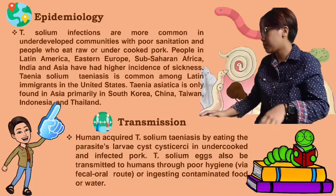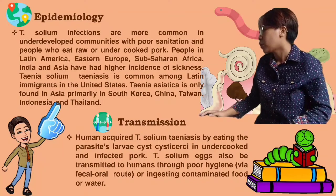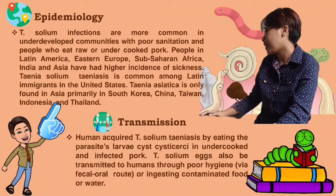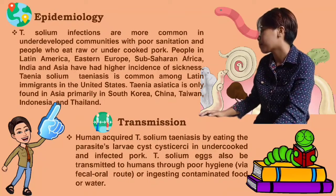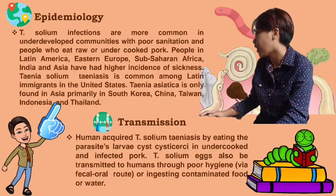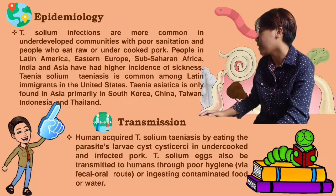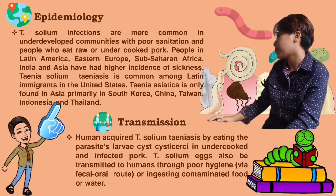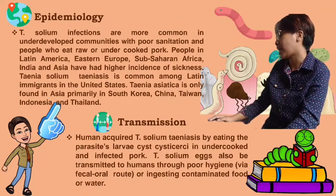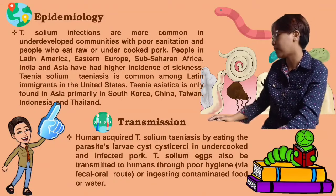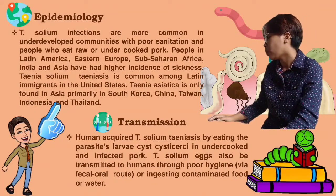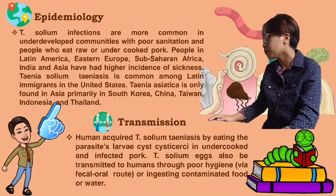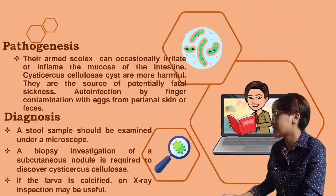For the transmission, humans acquire Taenia solium taeniasis by eating the parasite's larvae, cysticerci, in undercooked infected pork. Taenia solium eggs can also be transmitted to humans through poor hygiene via the fecal-oral route, or by ingesting contaminated food or water.